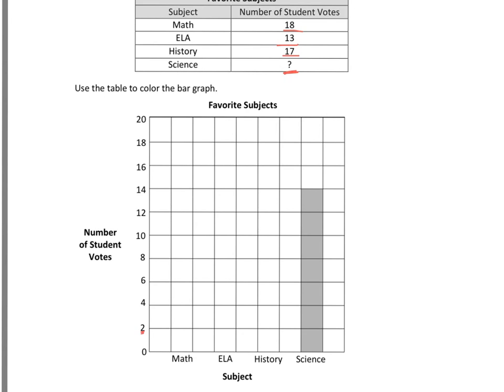So for science, I have 2, 4, 6, 8, 10, 12, 14. So I'm going to write that right in my chart. And I can see now that science has 14, history 17, ELA 13, and math with 18. And of course, math is going to have the highest number of votes.